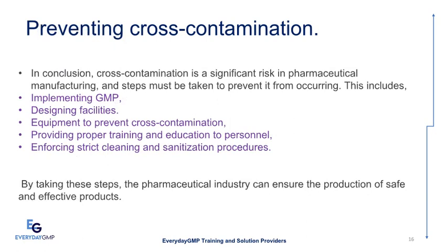Preventing cross-contamination. In conclusion, cross-contamination is a significant risk in pharmaceutical manufacturing, and steps must be taken to prevent it from occurring. This includes implementing GMP, designing facilities and equipment to prevent cross-contamination, providing proper training and education to personnel, and enforcing strict cleaning and sanitization procedures. By taking these steps, the pharmaceutical industry can ensure the production of safe and effective products.